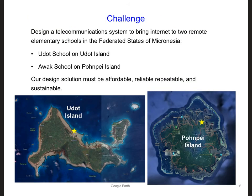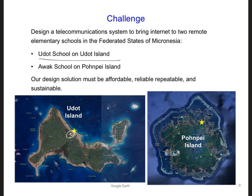Our last design challenge in this course is to design a telecommunications system that will bring internet access to remote schools in the Federated States of Micronesia for the first time. We're going to focus on connecting two specific elementary schools: the first is UDOT School on UDOT Island, where you can actually see the two main school buildings on the map. The other school is Awok Elementary School on Pohnpei Island, marked here with a yellow star. The main requirements for these internet connections are that they need to be affordable, reliable, repeatable — meaning we can set up many connections using the same methodology throughout FSM — and sustainable.